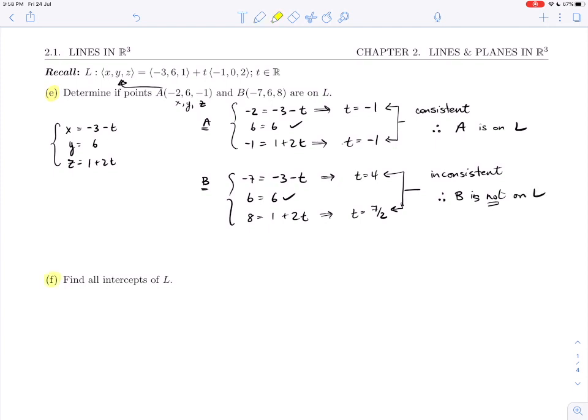Part F asks us to find all of the intercepts of L. Intercepts—this is something you may not have dealt with in three dimensions. The x-intercept is when y and z are 0, so (x, 0, 0). Similarly, the y-intercept looks like (0, y, 0), and a z-intercept looks like (0, 0, z).